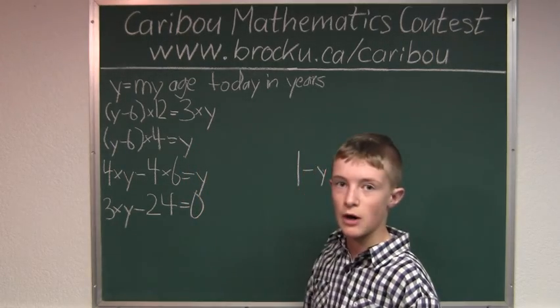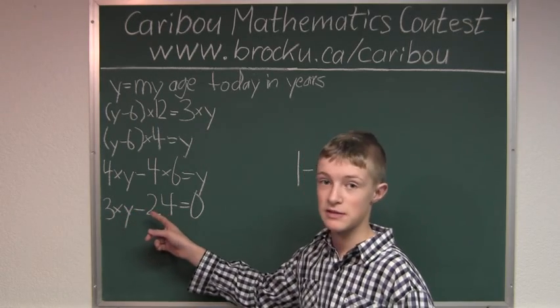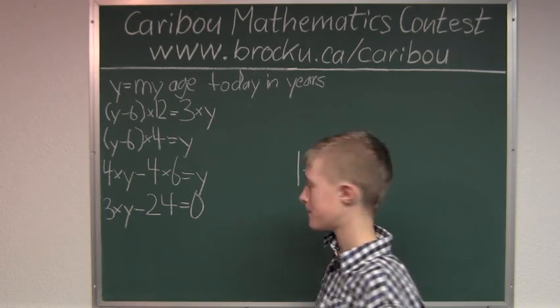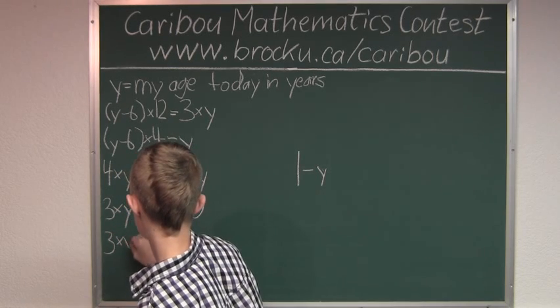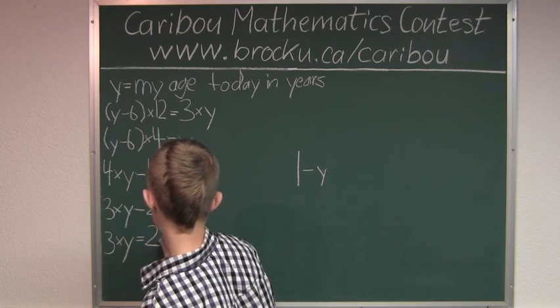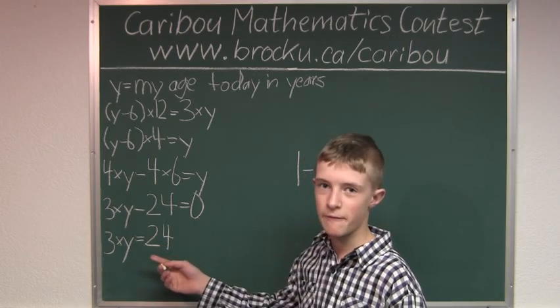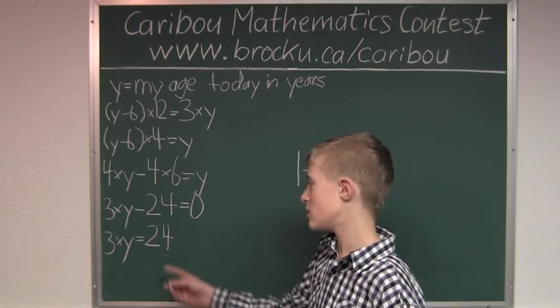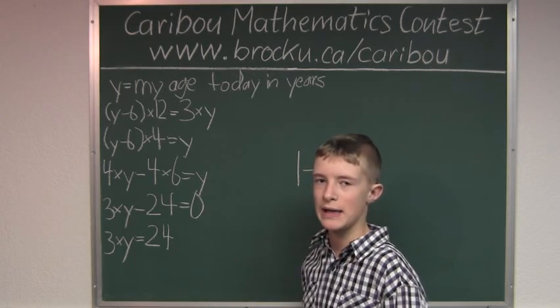So, if we know it equals zero, then we know that 3 times Y has to be the same as 24. Well, if we know that 3 times Y equals 24, then we can just do 24 divided by 3 equals 8. So, we know Y equals 8.